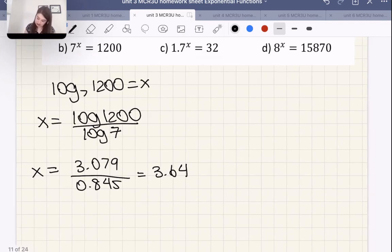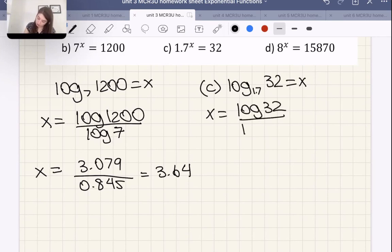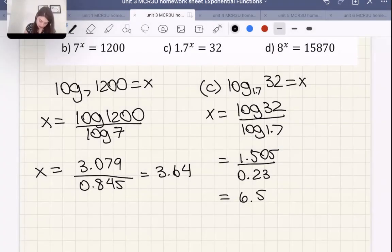So that's B. Let's do C next. So first things first is we have to do log with a base 1.7, 32 is equal to x, so therefore x is equal to log 32 over log 1.7. So log 32, 1.505 over log 1.7 is 0.23. So what's the answer there? 1.505 divide by 0.23, 6.54 is our answer.